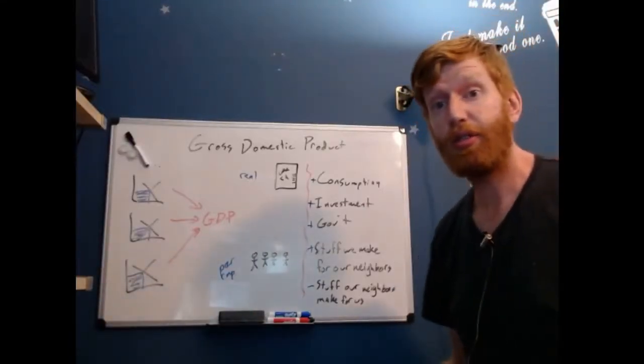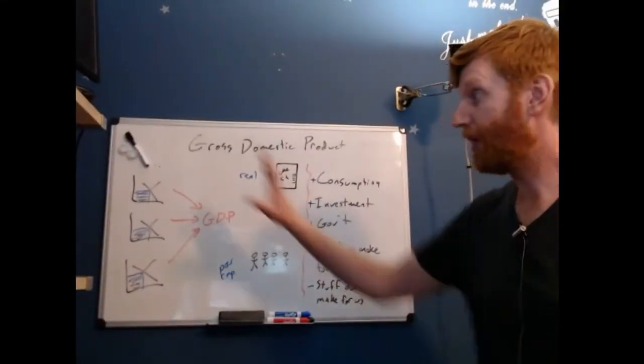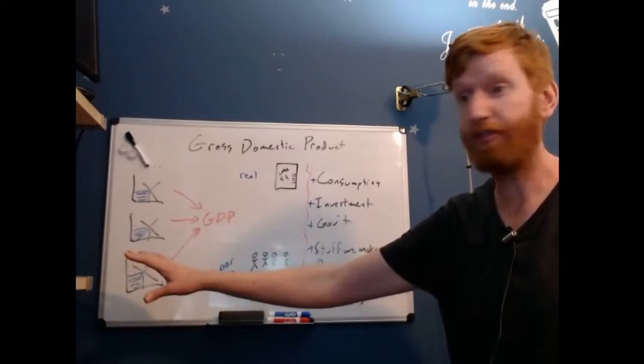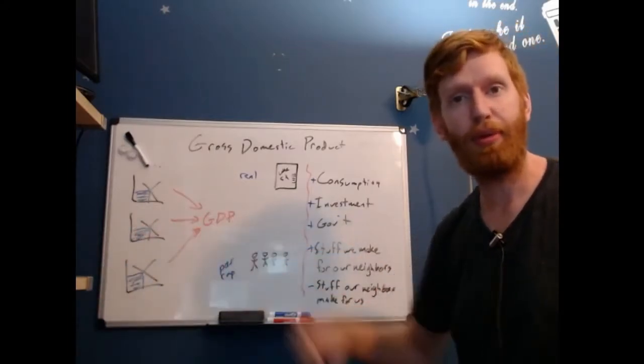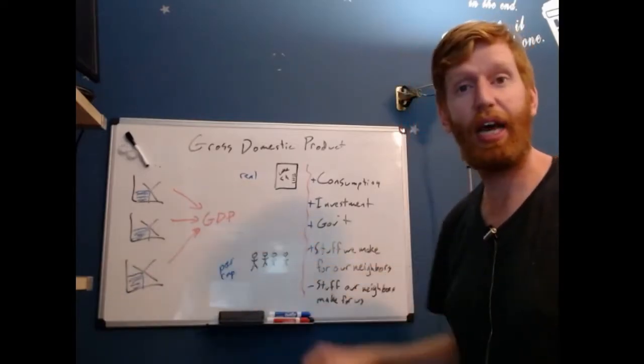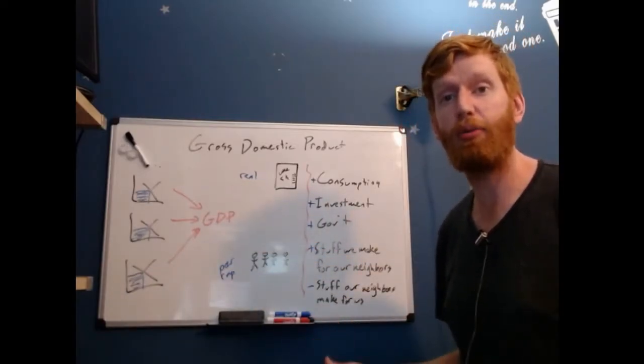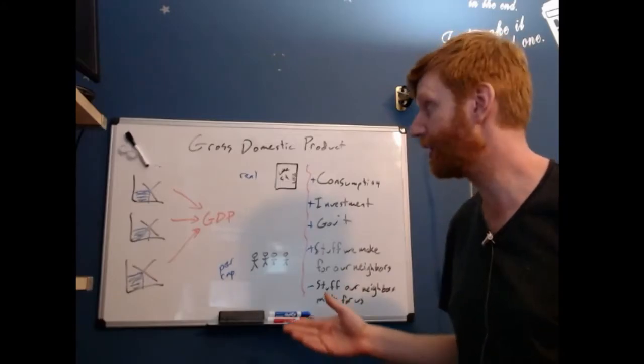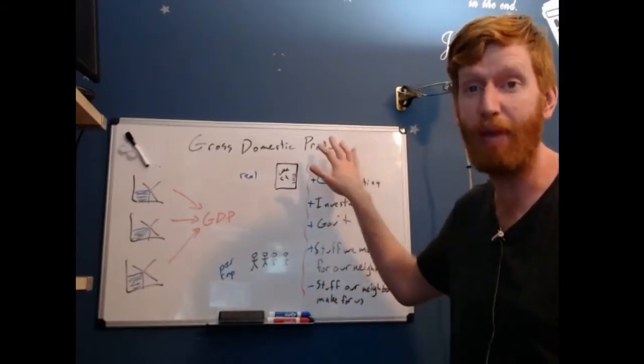GDP is the market value of final goods and services. We add up those dollars spent in each of the markets, and we've got gross domestic product—a number telling us how much we made.